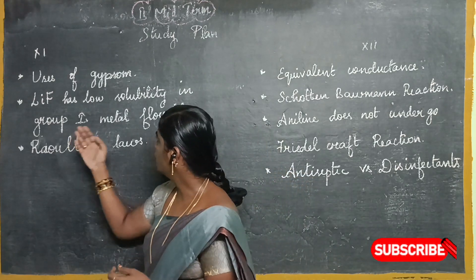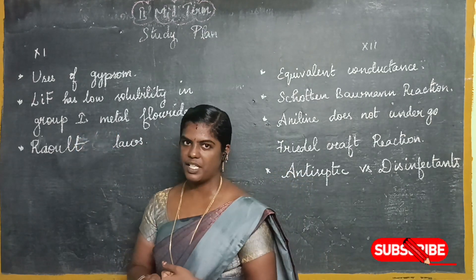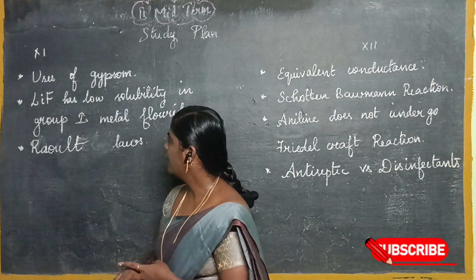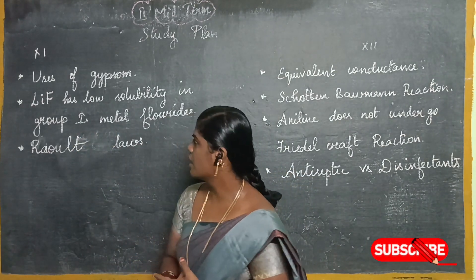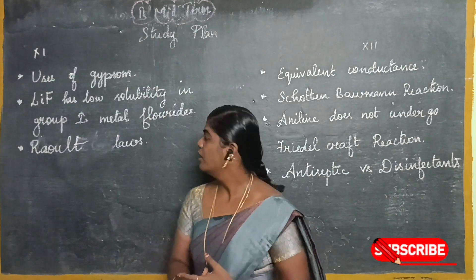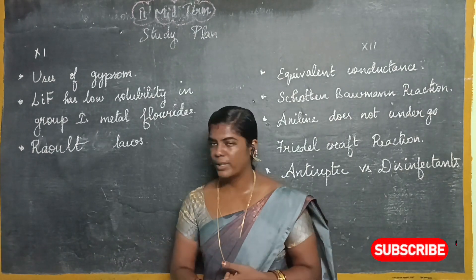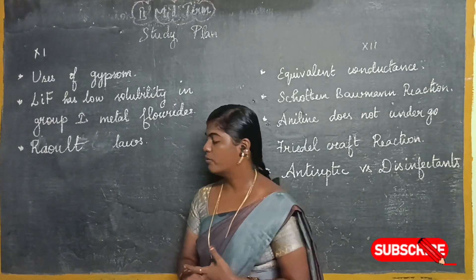Lemon is standard. Uses of gypsum. LiF has low solubility in group 1. Metal fluorides — another reasoning question.